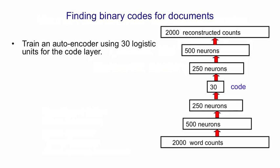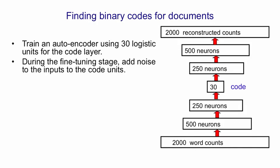Consider, instead of getting real-valued codes for documents, getting binary codes from the word counts of documents. We do this by training a deep autoencoder that has logistic units in its code layer. That by itself is not sufficient, because the logistic units will be used in their middle ranges where they have real values, in order to convey as much information as possible about the 2000 word counts. To prevent that, we add noise to the inputs to the code units during the fine-tuning stage. We first train it as a stack of restricted Boltzmann machines, then unroll those Boltzmann machines by using the transposes of the weight matrices for the decoder, and then fine-tune it with backpropagation. As we're doing that, we add additional Gaussian noise to the inputs to the code units.